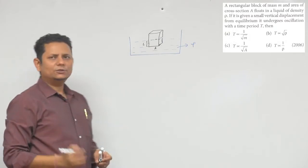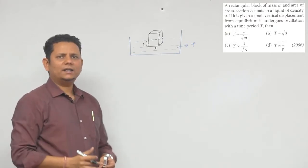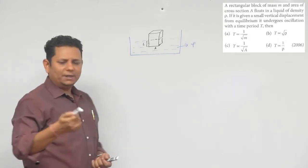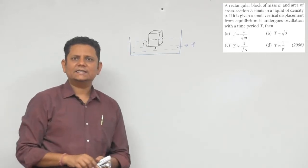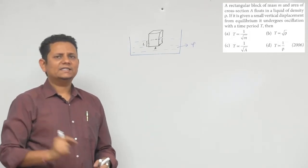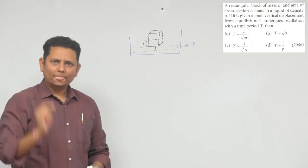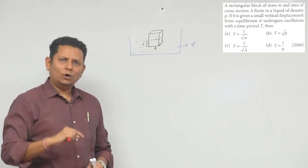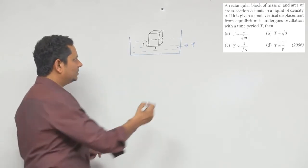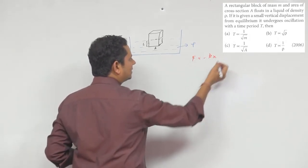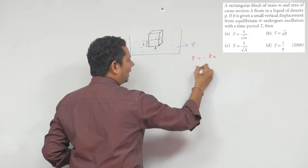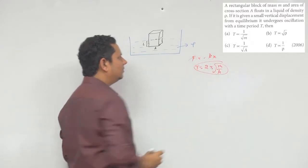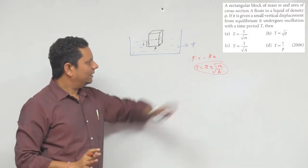We have to find the proportionality of the time period. We will use the approach: if the equation comes in the format F = -kx, then we can directly get the time period from that.